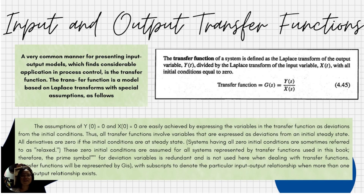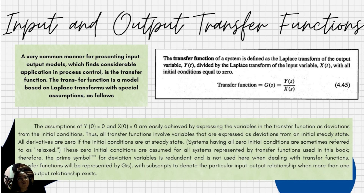A very common manner for presenting input-output models in process control is the transfer function. The transfer function is a model based on the Laplace transform with the special assumption that all initial conditions equal zero. The transfer function G(s) is defined as the Laplace transform of the output variable Y(s) divided by the Laplace transform of the input variable X(s): G(s) = Y(s) / X(s).